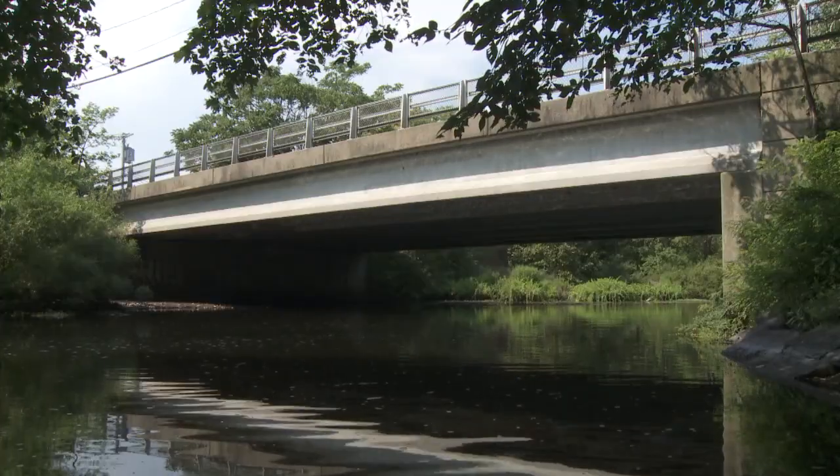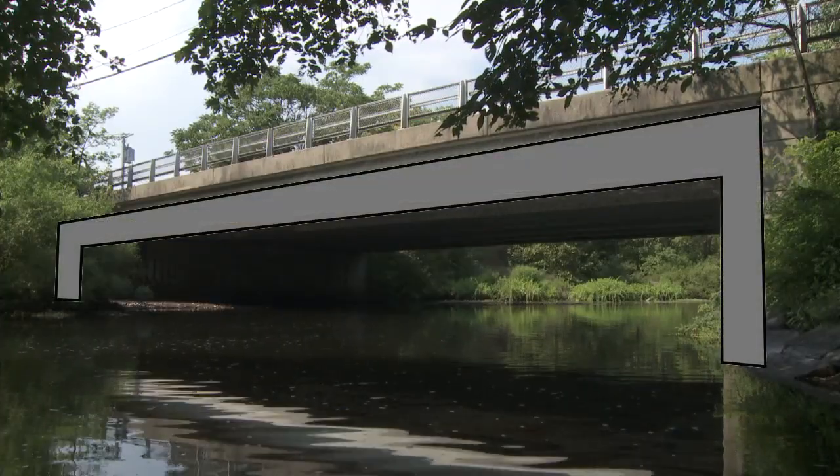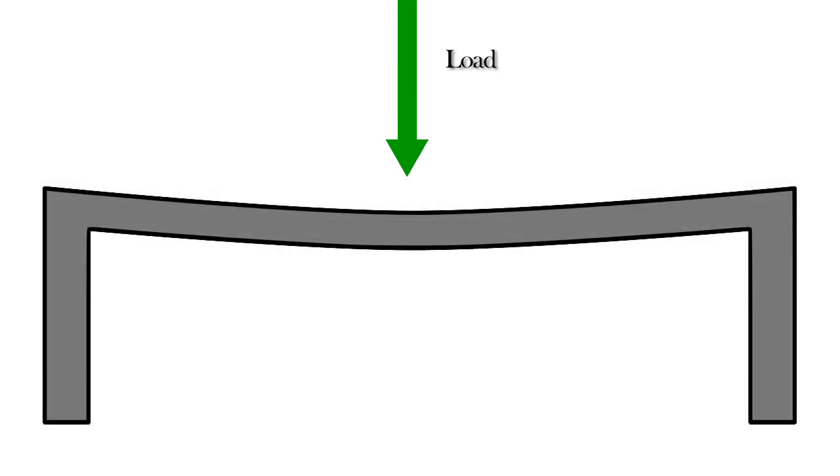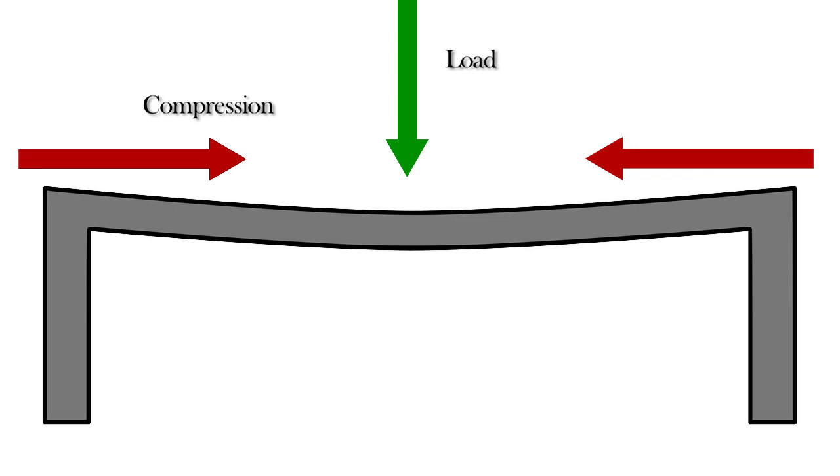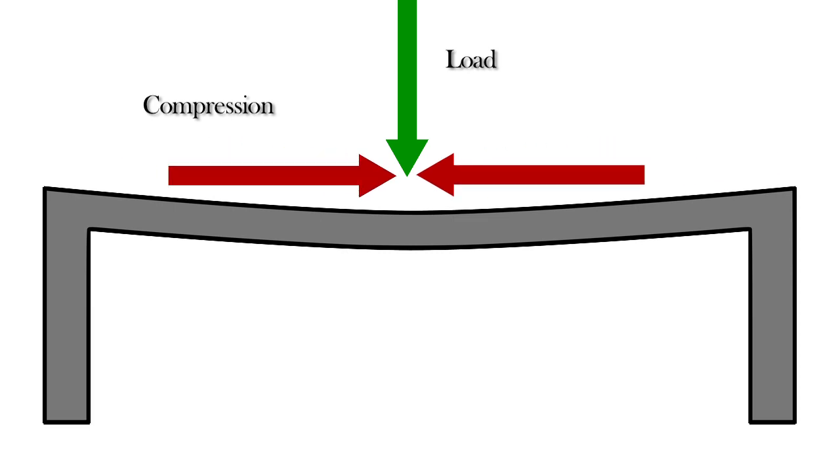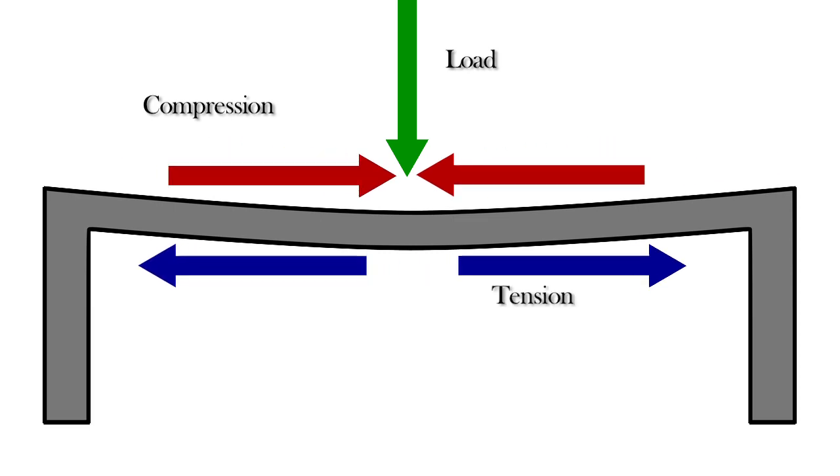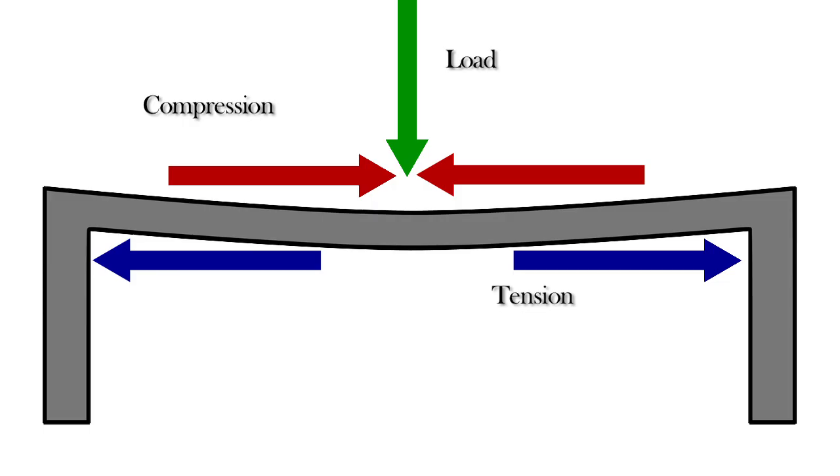Let's drop into our diagram mode to see how the forces act upon this bridge. When a load is applied to these bridges, they bend and experience two types of forces. The top of the beam is pushed together, which is called compression. The bottom of the bridge is pulled apart, which is called tension.